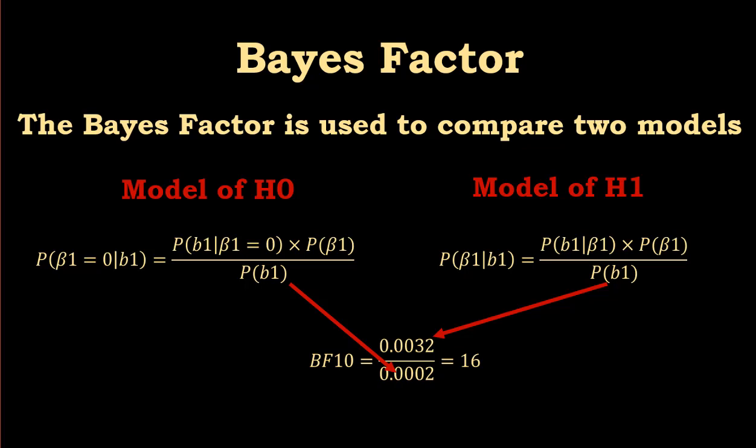We are used to the traditional method where we come up with a p-value, and after we calculate it, we make a decision — we say whether we reject the null hypothesis or whether the result is significant. In Bayesian statistics, we do not do that. We just provide the quantity for the evidence in favor of one model relative to the other. So basically what we can say here is that the data is 16 times more likely under the model of the alternative hypothesis than the model of the null hypothesis.